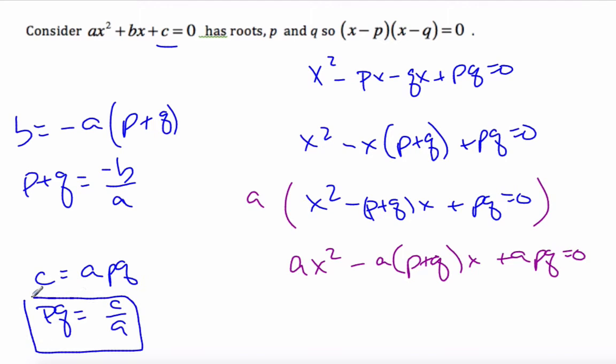And so I know if I have the two roots, if I add the two roots, it's equal to minus b over a. If I multiply the roots, it's equal to c over a.